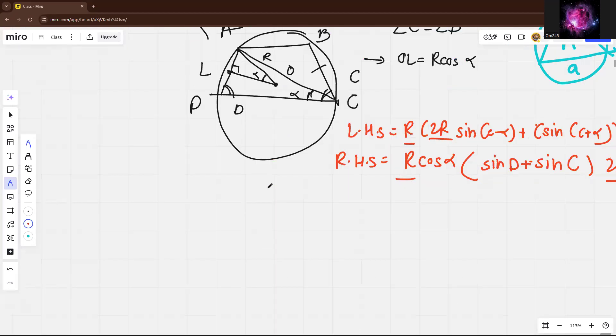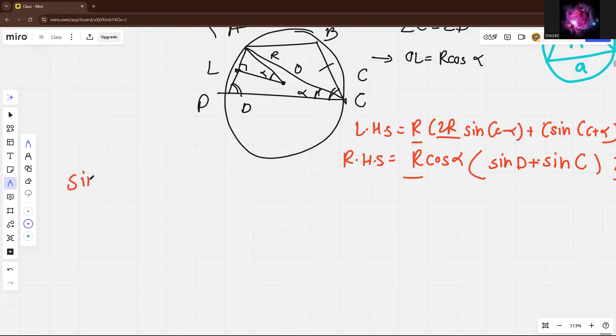And we will also use one formula, that is sine(alpha plus beta) is equal to sine alpha cos beta plus cos alpha sine beta.